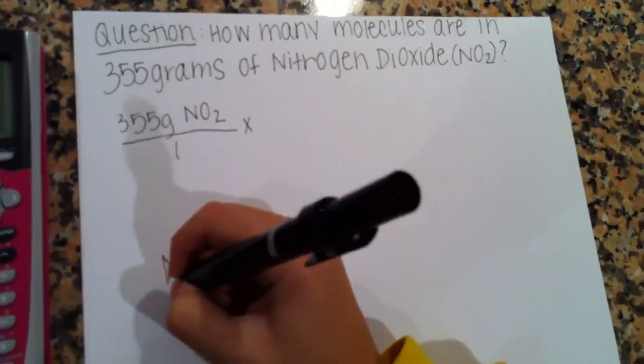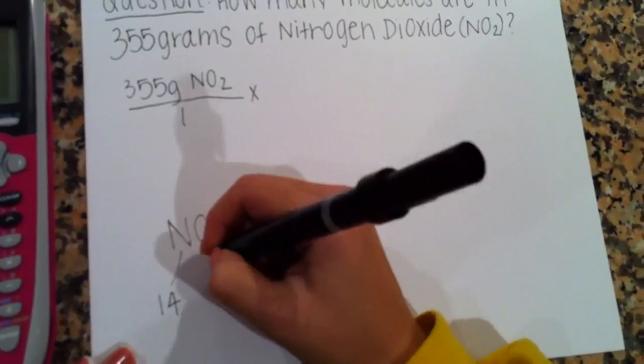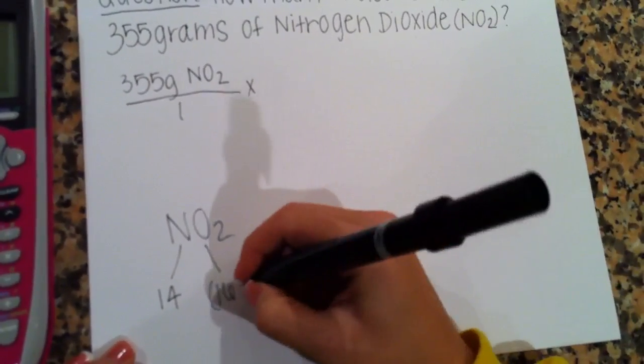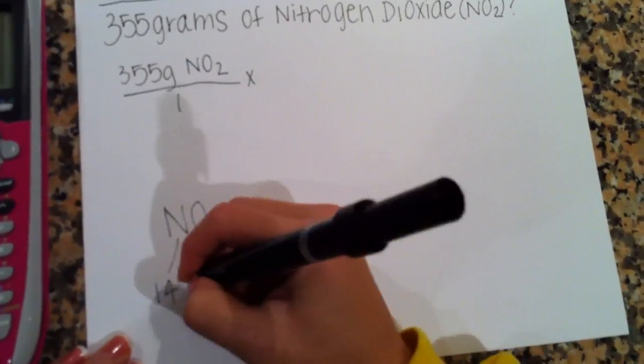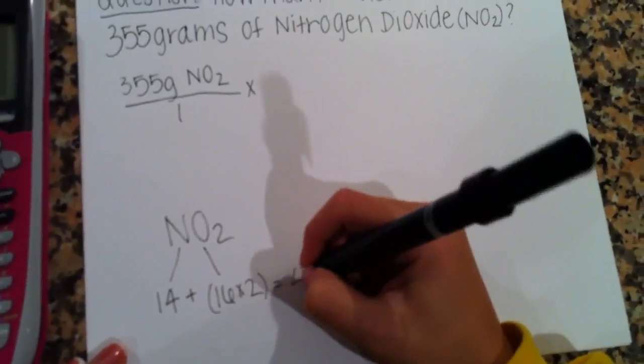So we write it out and we know that nitrogen has a mass of 14 and oxygen has a mass of 16. And since there is 2 oxygens we multiply that by 2 and we add them both together. When we add them together we get 46 grams.